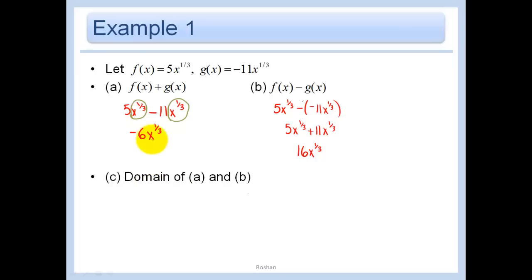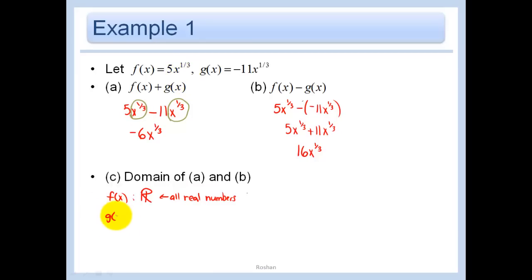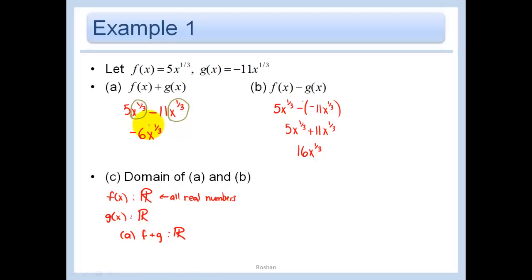What are the possible values of x? f of x really has no restriction on the domain — all real numbers. When we're taking the cube root, there is no restriction on x. And g of x, again we're taking the cube root of x, so that's all real numbers also. So for f plus g, the domain is all real numbers. Since f and g are both unrestricted, f plus g is not restricted, and we can see from our final answer that we just have a cube root of x.